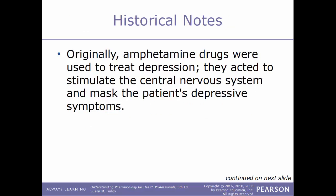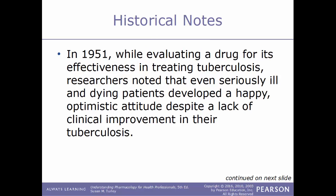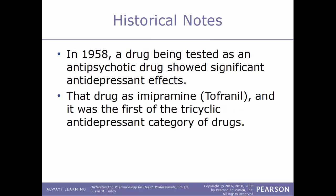Originally, amphetamine drugs were used to treat depression by stimulating the central nervous system to mask depressive symptoms. However, amphetamines have a high potential for abuse and do not correct the underlying chemical imbalance, so they are no longer used for depression. In 1951, while evaluating a drug for treating TB, researchers noted that seriously ill patients developed a happy, optimistic attitude despite no clinical improvement. This drug was identified as a MAO (monoamine oxidase) inhibitor, forming the basis of the first drug category used to treat depression.